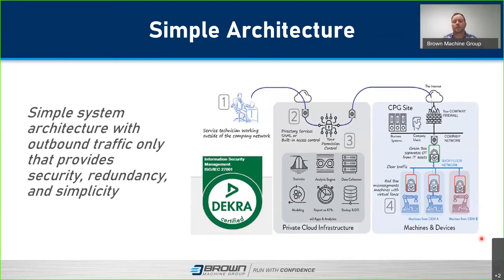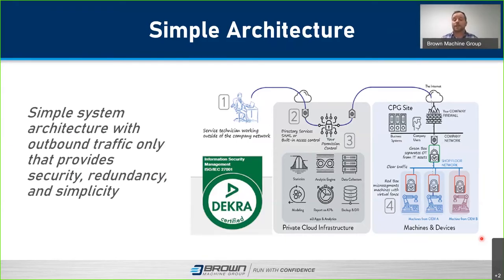The second installation method is more expensive but gives more control — we install one red box per piece of equipment. So you'd have one in your former, one in your trim press, and one in ancillary equipment like a grinder or extruder. This gives you the ability to remotely monitor each piece individually and have OEE and downtime tracking per separate piece of equipment.